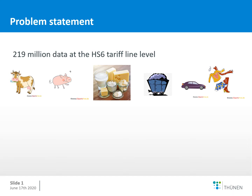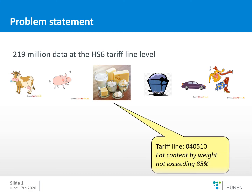Why do we need additional programs to aggregate tariffs? At the HS6 digit tariff line level of the harmonized system, we have 290 million data points. For example, for butter with fat content not exceeding 85%, we have a tariff line called 040510, and for this specific tariff line we have a specific tariff.